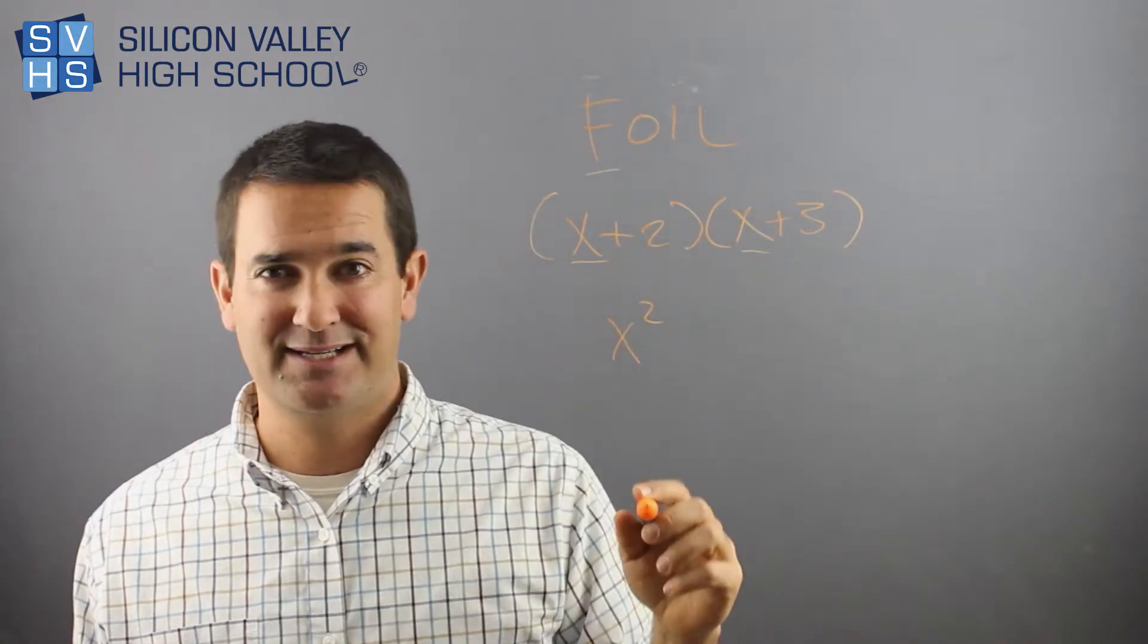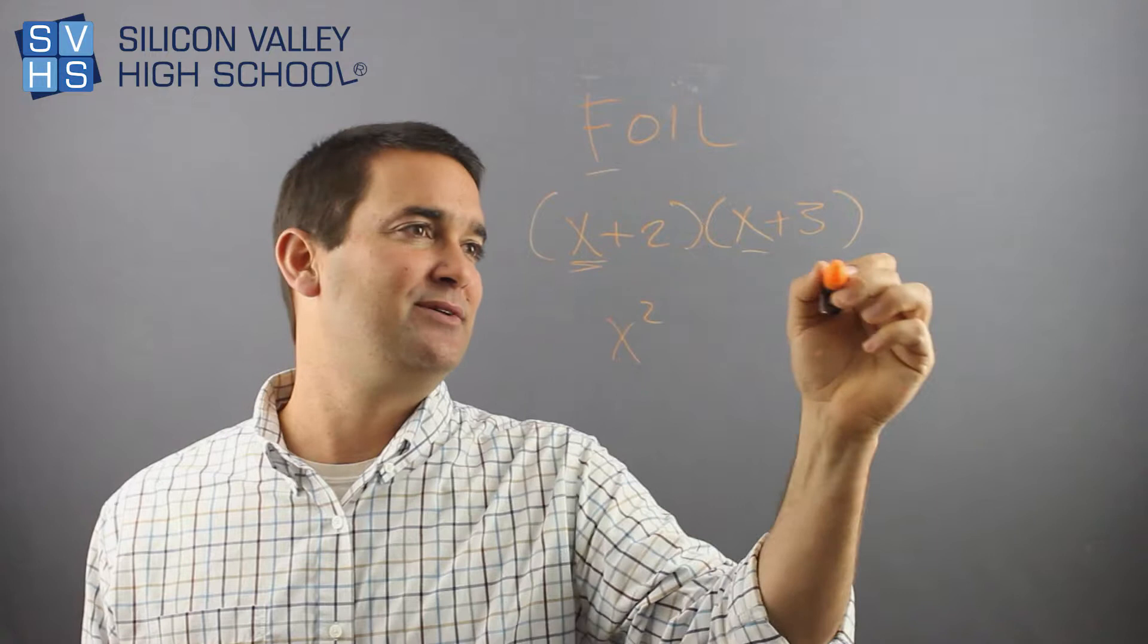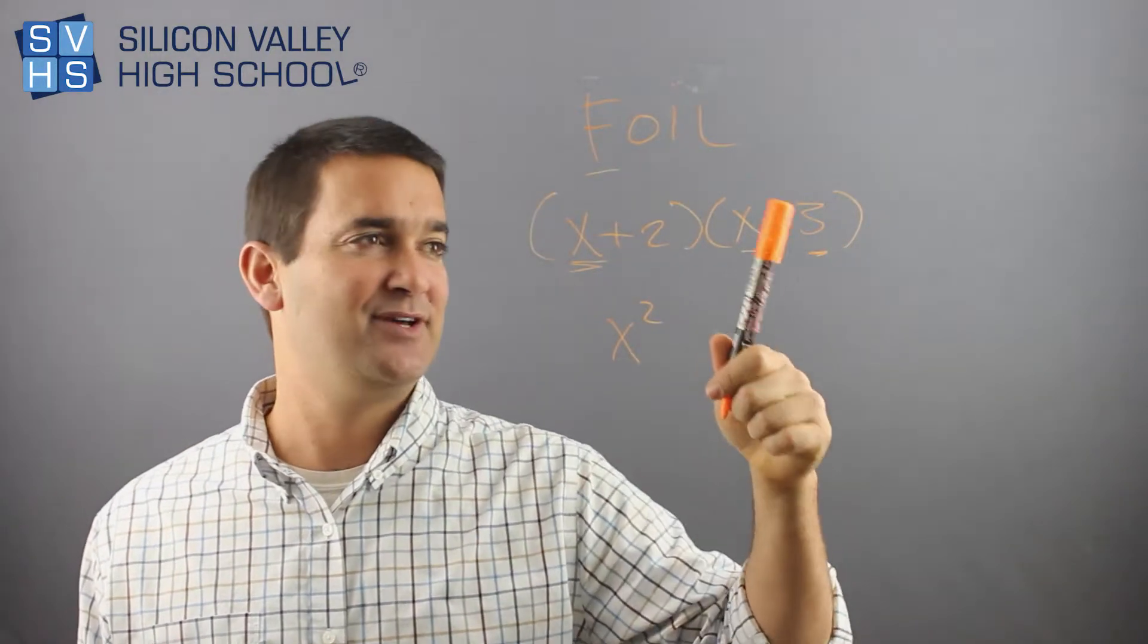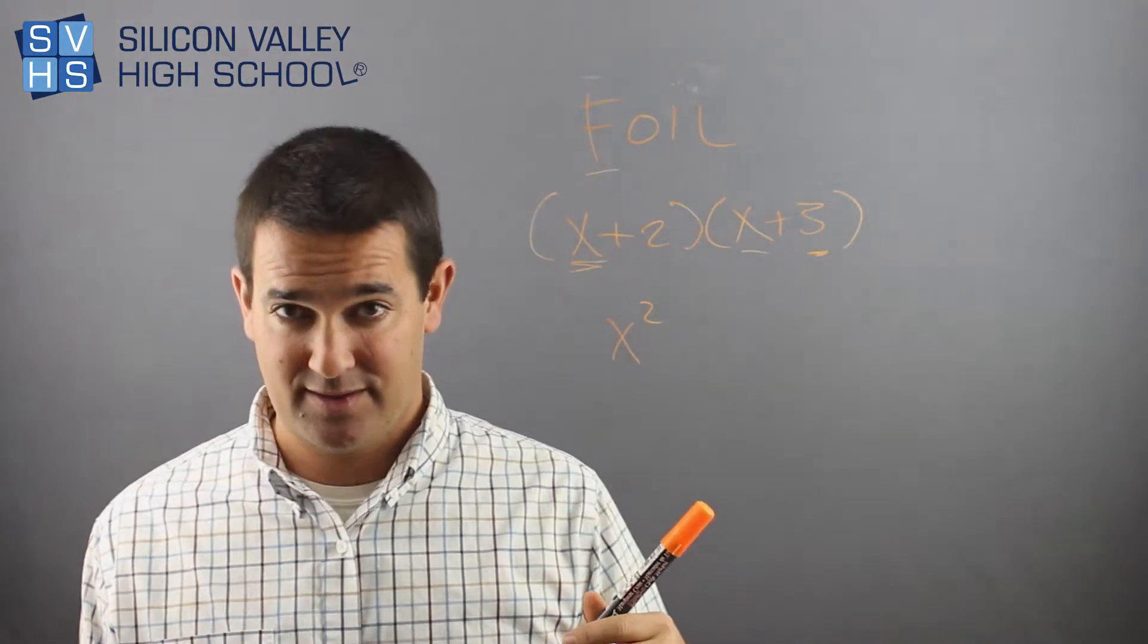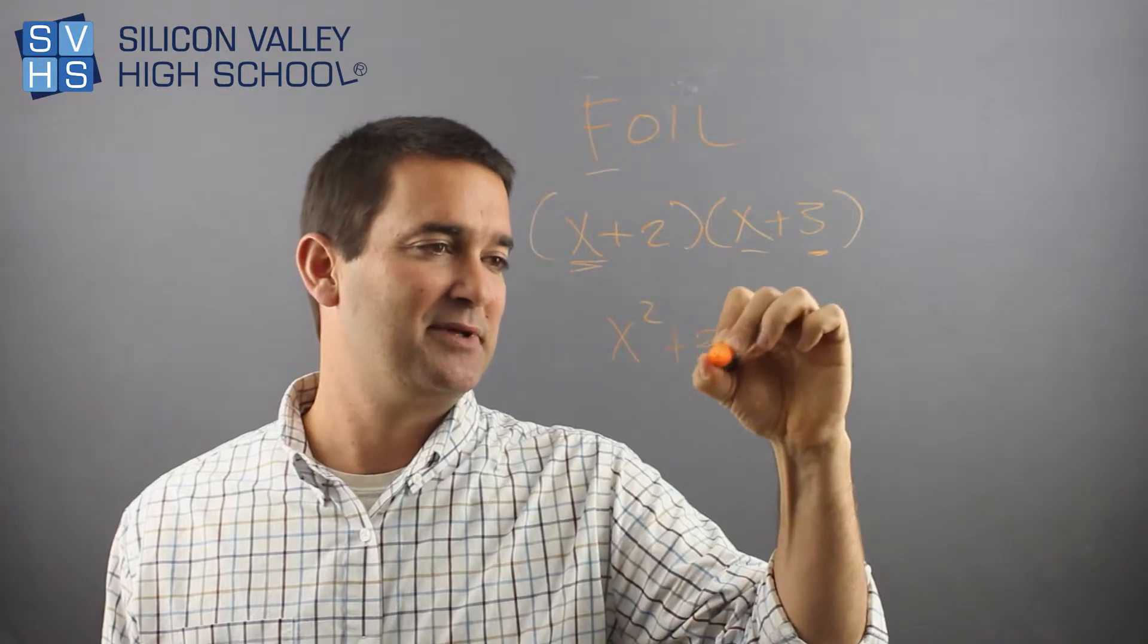Outside, O is outside times outside. He's the outermost, he's the outermost on his half. So X times 3 or 3 times X is plus 3X.